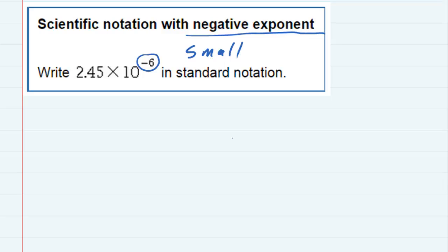So we're starting off with our 2.45. We know that we have to move it six spaces, and we know that my ending result is going to be a very small number. That's what the negative exponent means. So that means I must move that decimal to the left in order to make it a small number. I need to move it to the left six times.